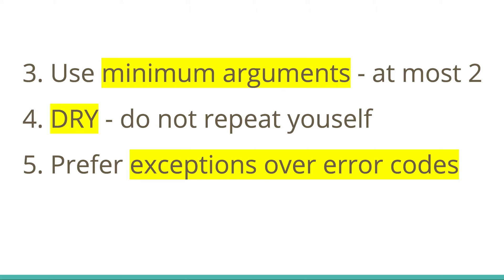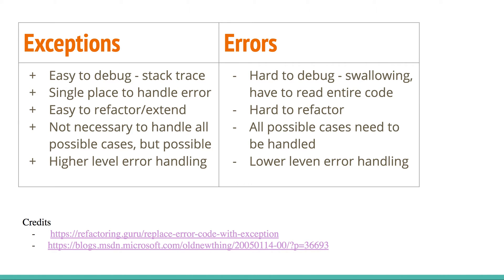The final tip is to use exceptions and prefer them over error codes. My preference now is to use exceptions as much as possible over error codes. Exceptions make it very easy to debug — from the stack trace you can see where the error happened. You don't have to understand the entire codebase to debug and fix the problem. Whereas with error handling, most of the time the error is swallowed and the error code thrown is at a much higher level, making it hard to pinpoint where the error is happening.